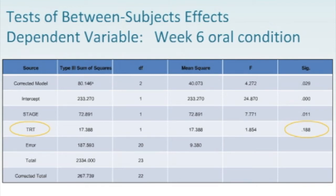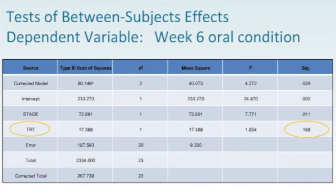Looking at the Test of Between-Subjects Effects for the ANCOVA, the sig value for treatment group has decreased considerably — from 0.453 down to 0.188. Also, the R squared has increased substantially to nearly 30%, or 0.299, compared to the previous 0.027. Even though the result is not statistically significant, there is quite a bit of improvement in the model with the addition of the covariate of cancer stage, showing that cancer stage is a meaningful predictor of oral condition.